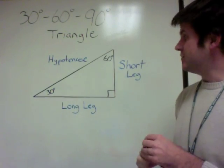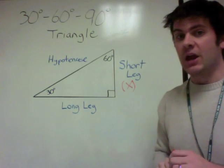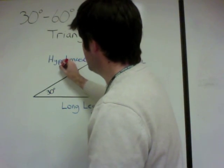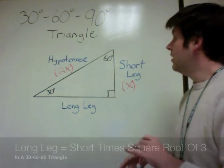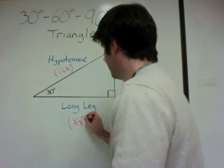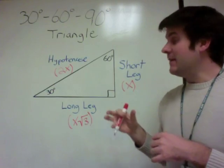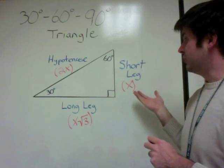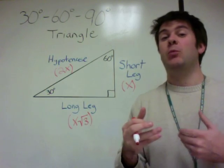Let's assign the short leg a length of x. The hypotenuse is always twice the length of the short leg in a 30-60-90, so we call it 2x. The long leg is the length of the short leg times the square root of 3, written as x root 3. So the three sides stay locked in these proportions. The hypotenuse is twice the short leg, and the long leg is root 3 times the short leg. Let's look at some examples to make this clearer.